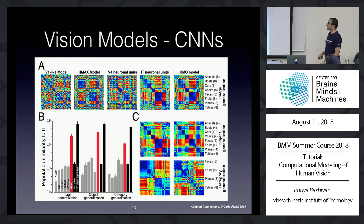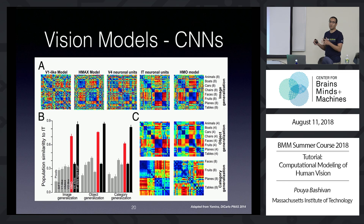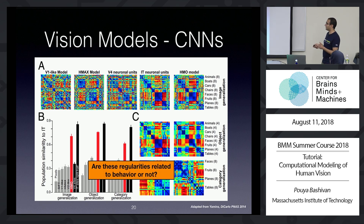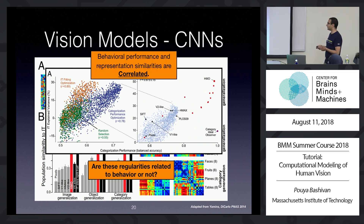Another way to compare features between models and the brain is to look at how population responses differ when comparing responses to one image versus another, or one category versus another. These comparisons are made using representational dissimilarity matrices, which encode the dissimilarity between responses in a set of features — either neural activity in IT neurons or the convolutional model. You can appreciate how similar these two patterns are, which is basically encoding the dissimilarity in population responses between the two. From previous studies in our lab, we can say that behavioral performance and the similarity in representations between brain and models are correlated.